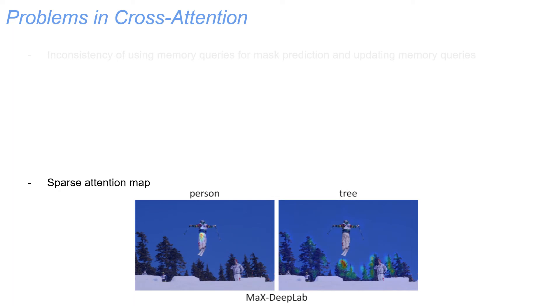Second, it is natural to expect all pixels in the objects should be activated for corresponding memory queries. But in the visualization of Max DeepLab, we observe a sparse attention map, where only a few pixels are activated to update corresponding memory queries.